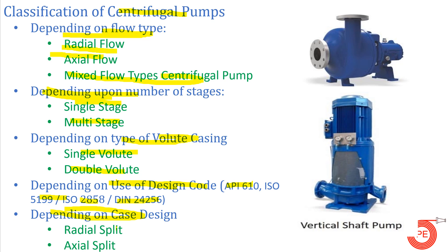Depending upon case design, there are two types: radial split pump and axial split pump. All these categories represent the classification of centrifugal pumps, and in many interviews people are asked about the classification of centrifugal pumps based on these various types and considerations.